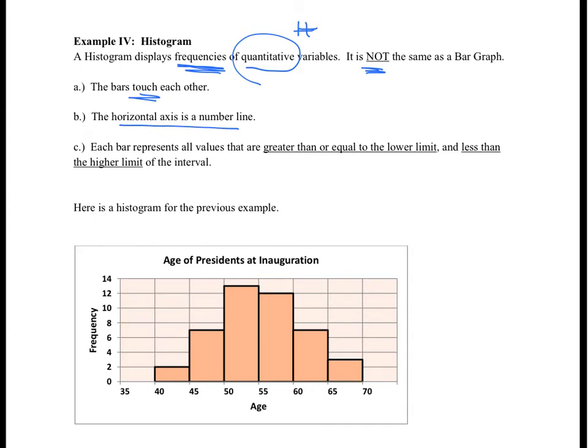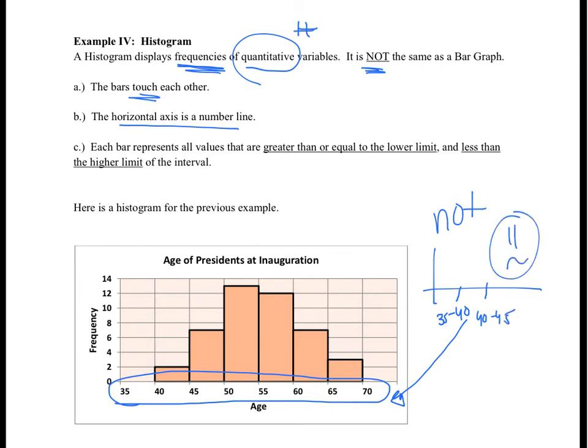Looking at this graph for ages of presidents at inauguration, notice this scale looks similar to any graph from algebra. I do not want to see you labeling 35 to 40 and 40 to 45. That is not what I want you to do.